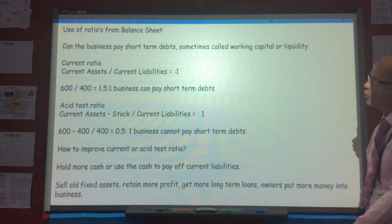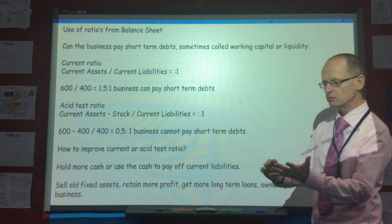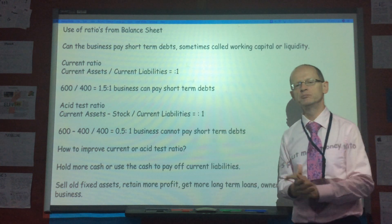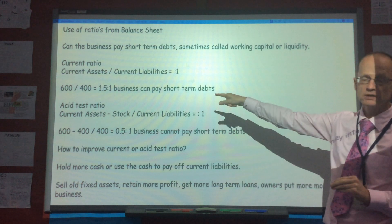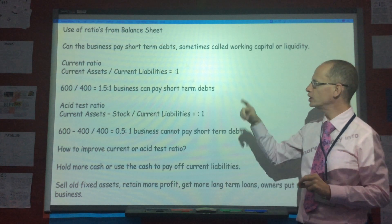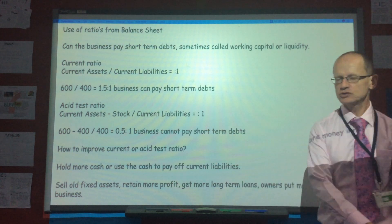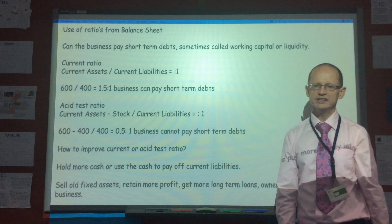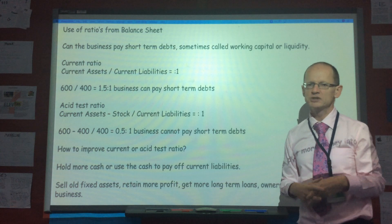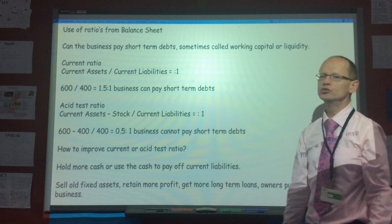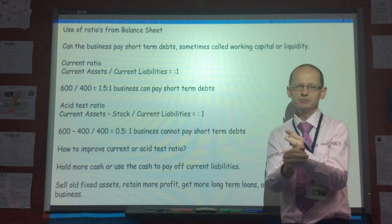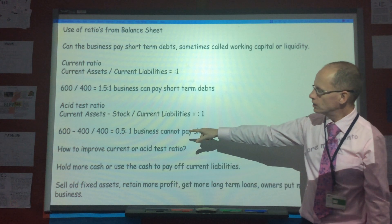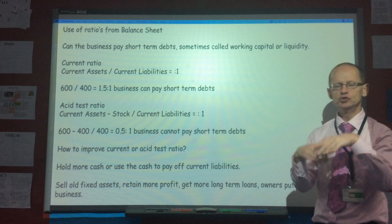We have two ratios to assess whether the business can pay short-term debts: the current ratio and the acid test ratio. The current ratio is current assets divided by current liabilities. In this example, 600 divided by 400 gives a ratio of 1.5 to 1 — the business can pay short-term debts. The acid test ratio removes the influence of stock, because some stock — like physical CDs that people no longer buy — may take a long time to turn into cash. It's calculated as current assets minus stock, divided by current liabilities: 600 minus 300 is 300 — wait, 600 minus 400 is 200 — divided by 400 gives 0.5 to 1.